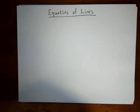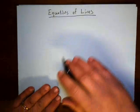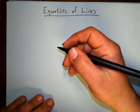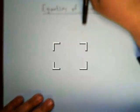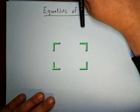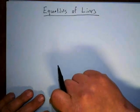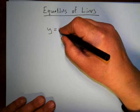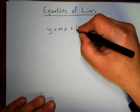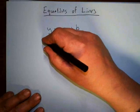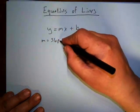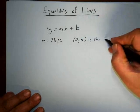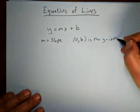We're going to be talking about the regression line, but before I do that I want to talk just about equations of lines in general. This is something you probably learned in algebra 1. We're not going to be doing a lot of graphing lines, but we do need some basic understanding of the equation of a line. What you probably remember is y equals mx plus b, where m is the slope of the line and b is the y-intercept.